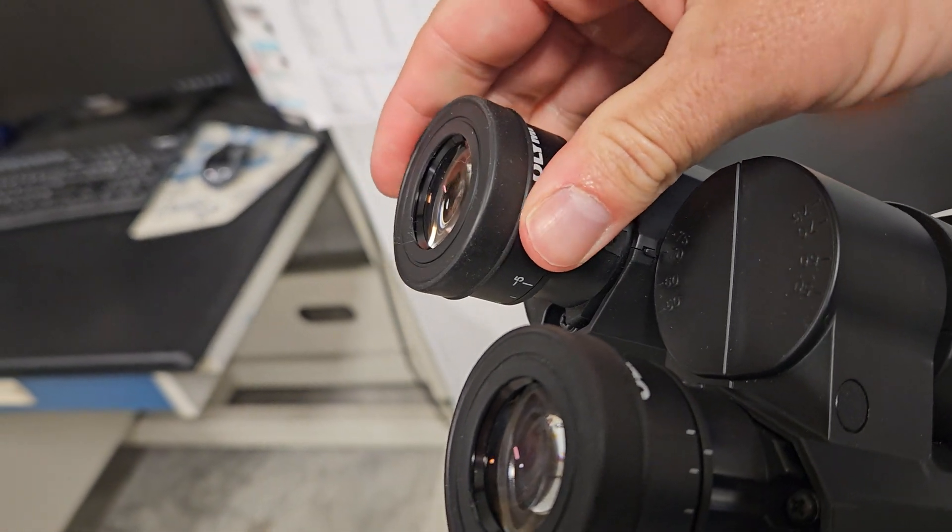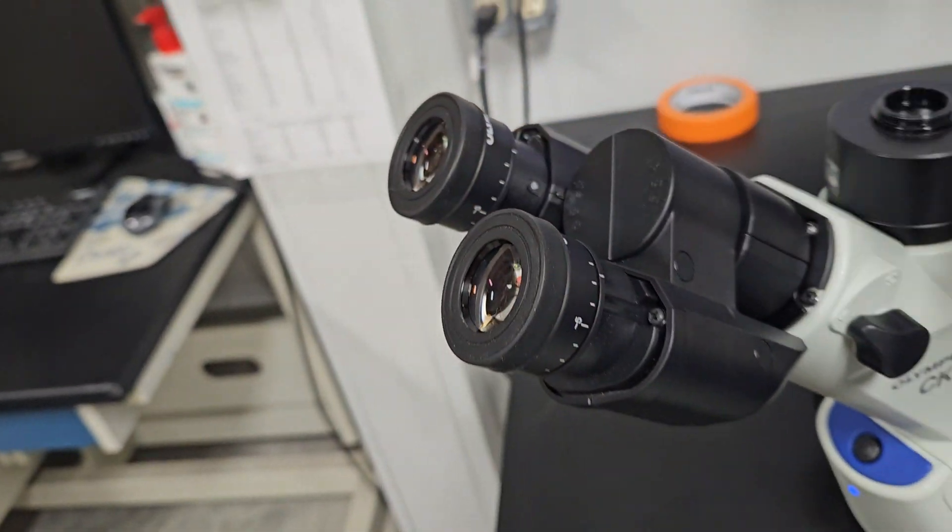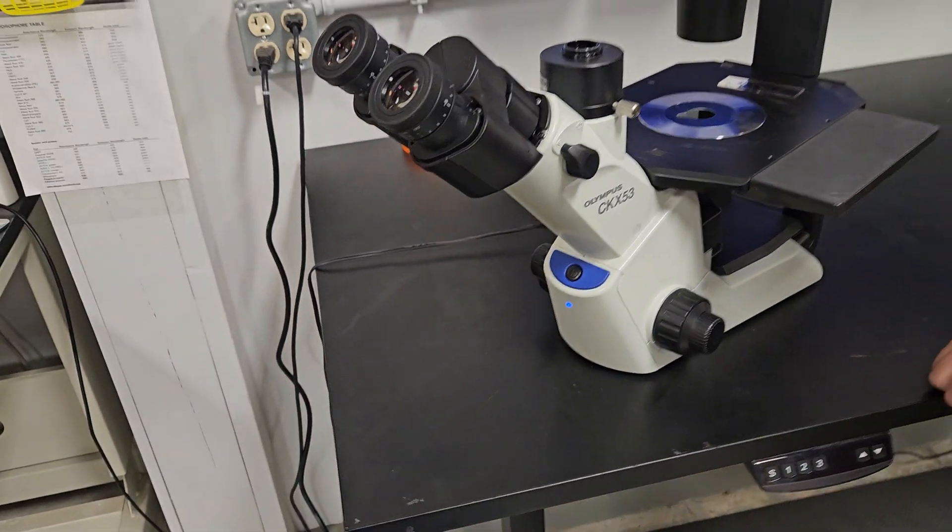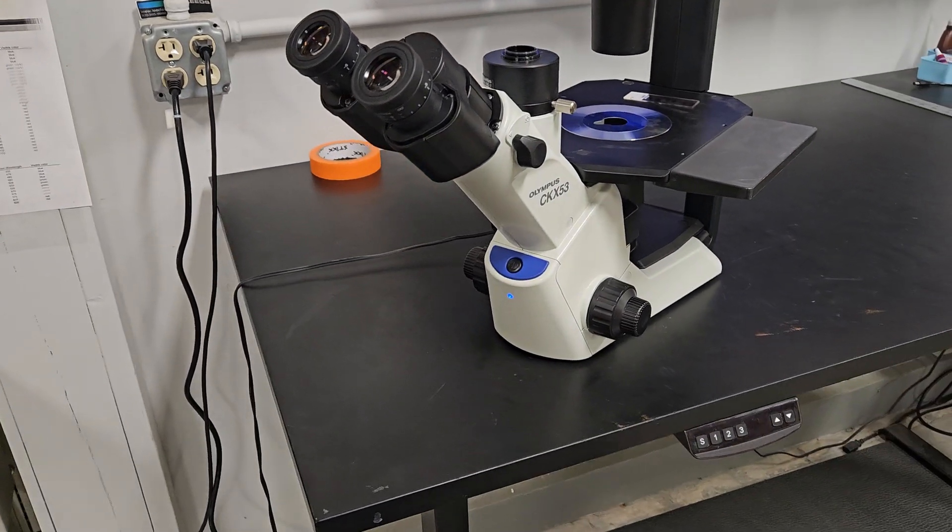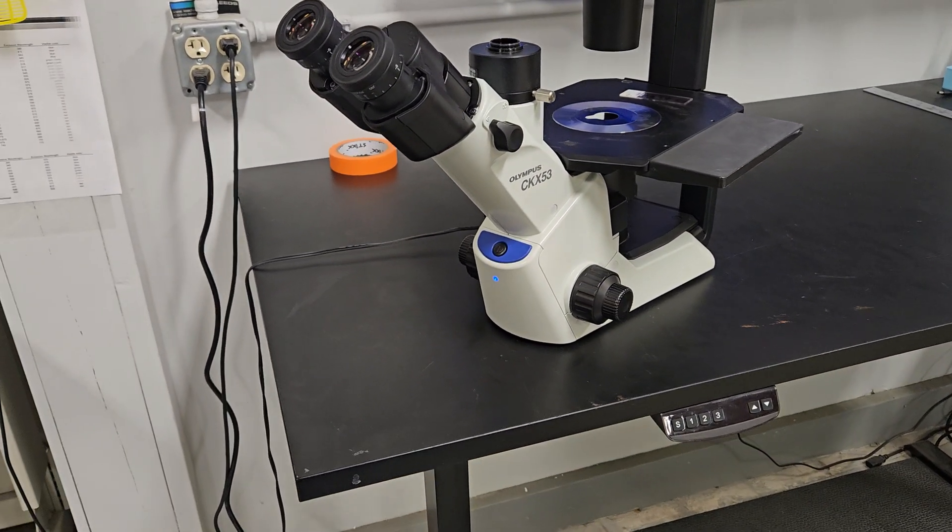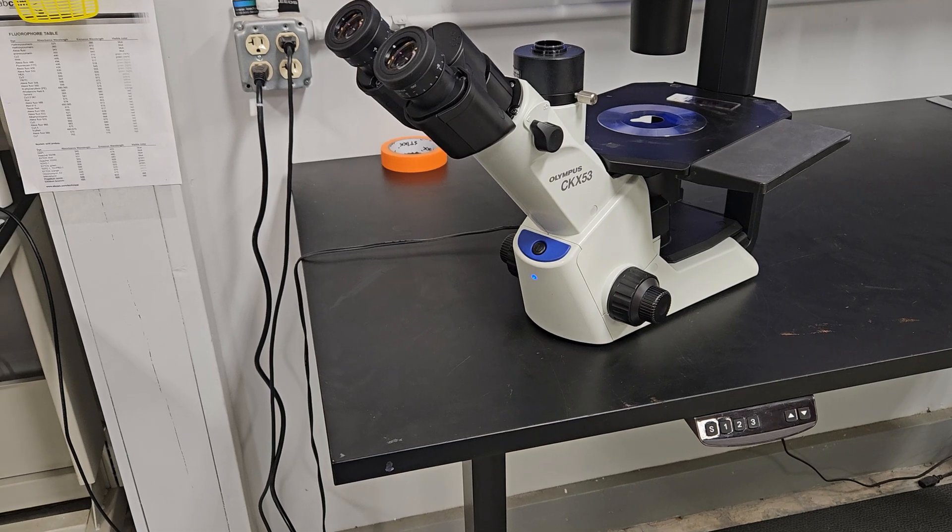You have this little screw right here. This screw locks the eyepieces in. So see, both of these are locked in. They will be removed. I'm going to grab a screwdriver real quick and show you how that works. They'll be removed whenever we ship the scope.